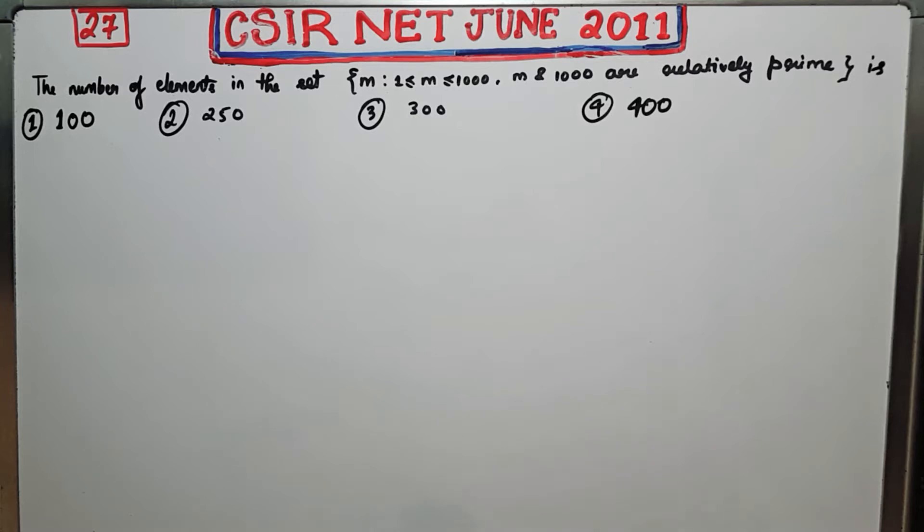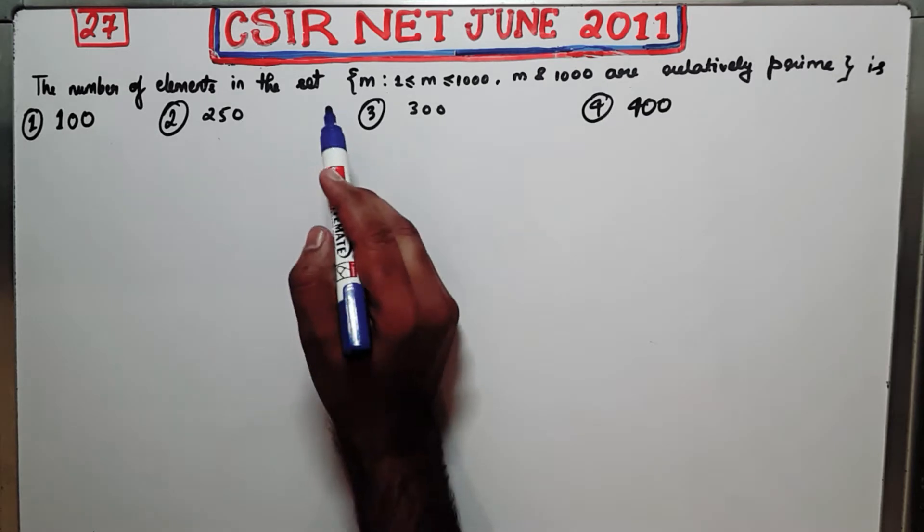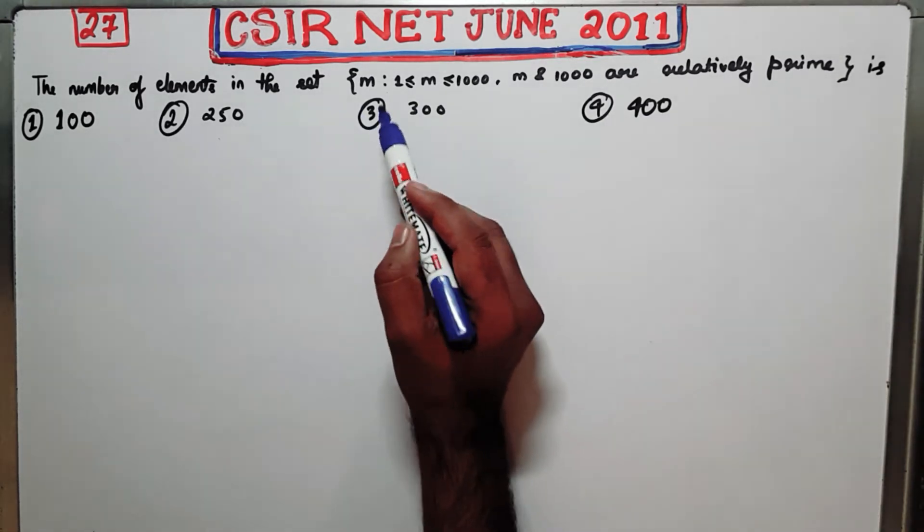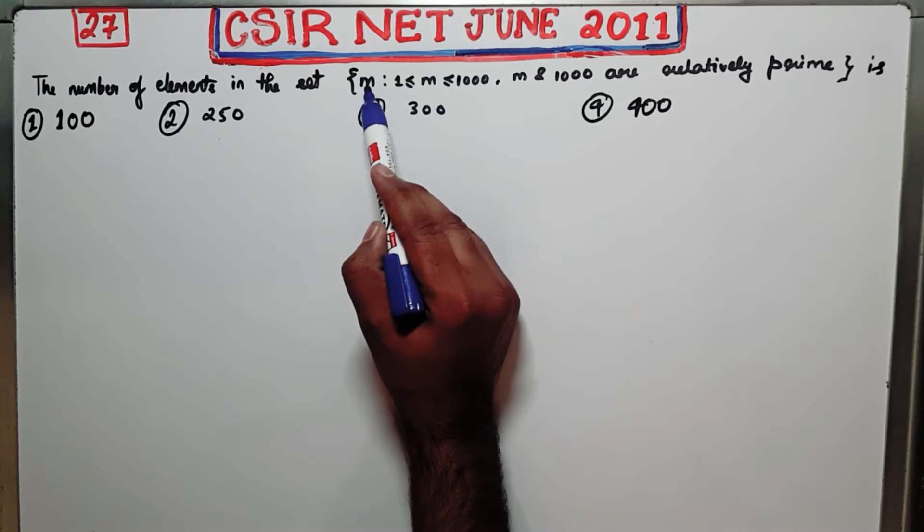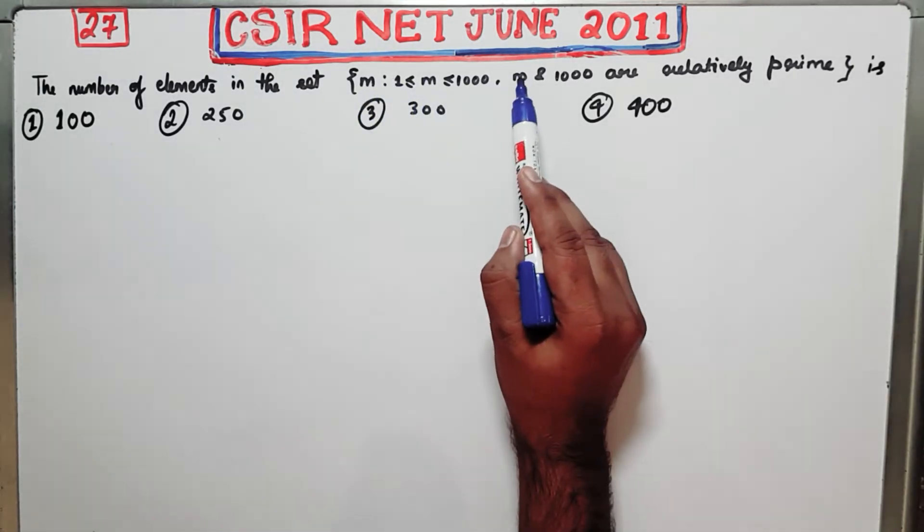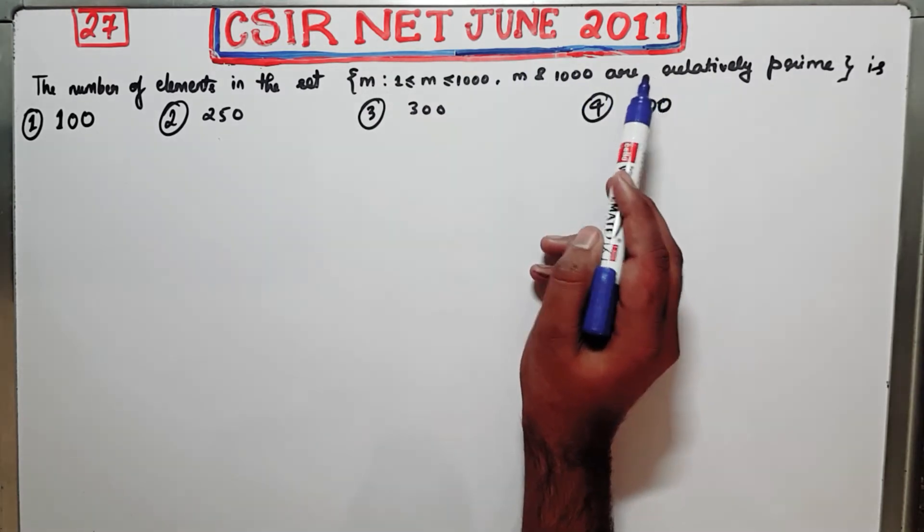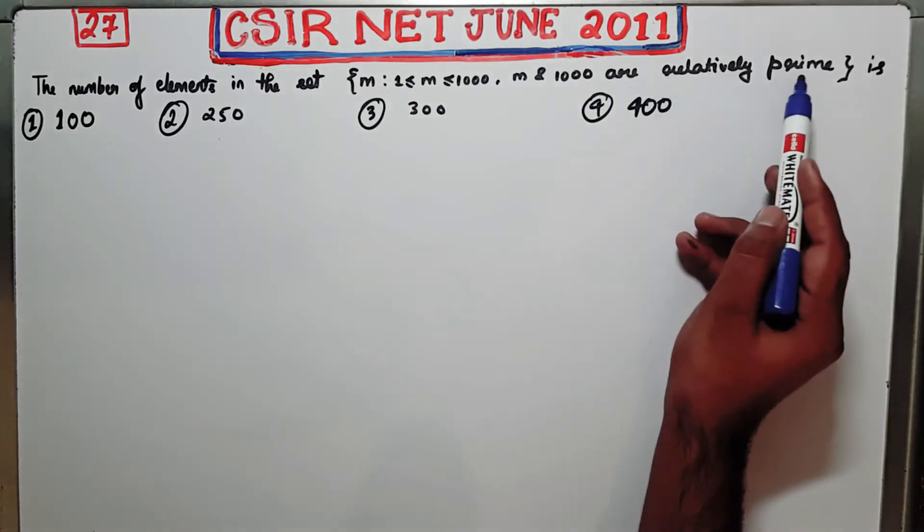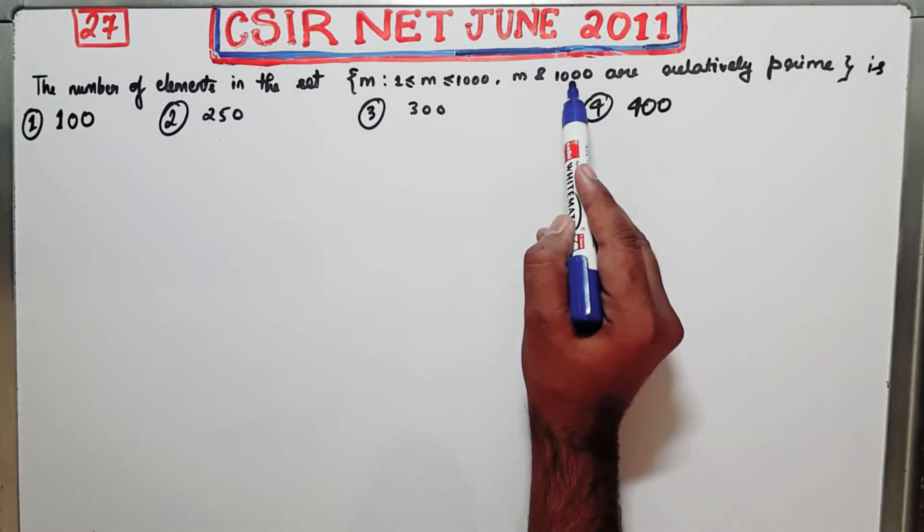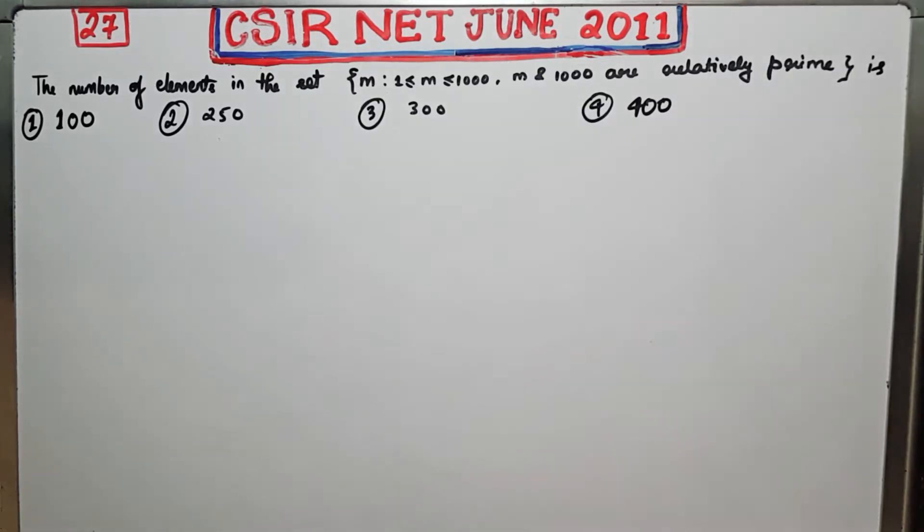So let us firstly read this question. The number of elements in the set, so this is your set and you have to calculate the cardinality of this set. It says it will consist of all those elements which are between 1 and 1000 such that GCD of M and 1000 is equal to 1. So they are using the word relatively prime, which means the GCD of M and 1000 must be 1.